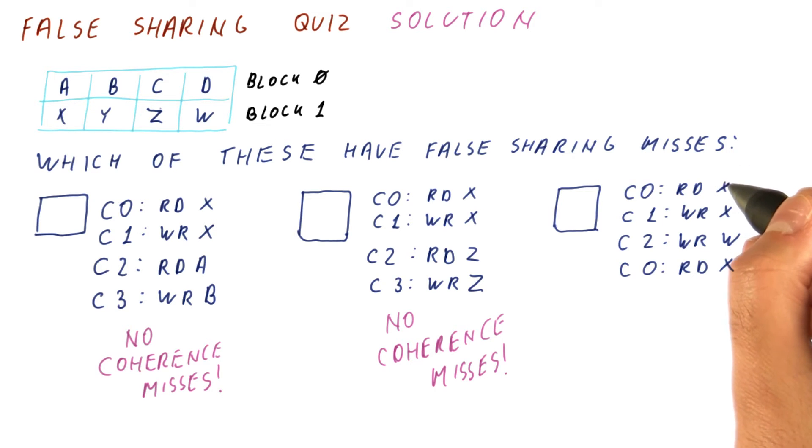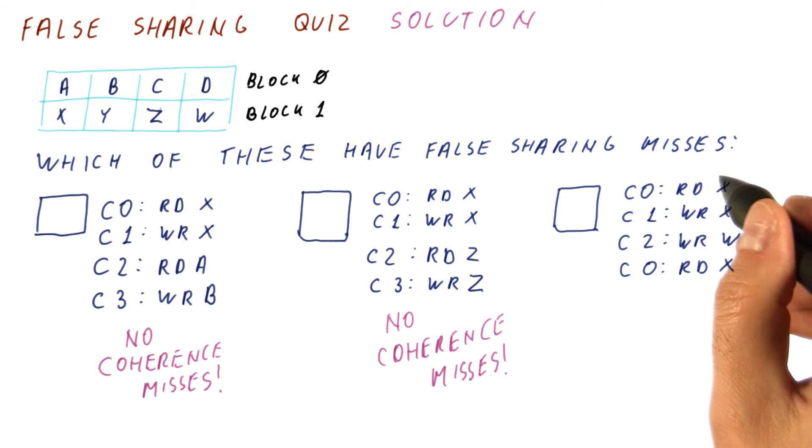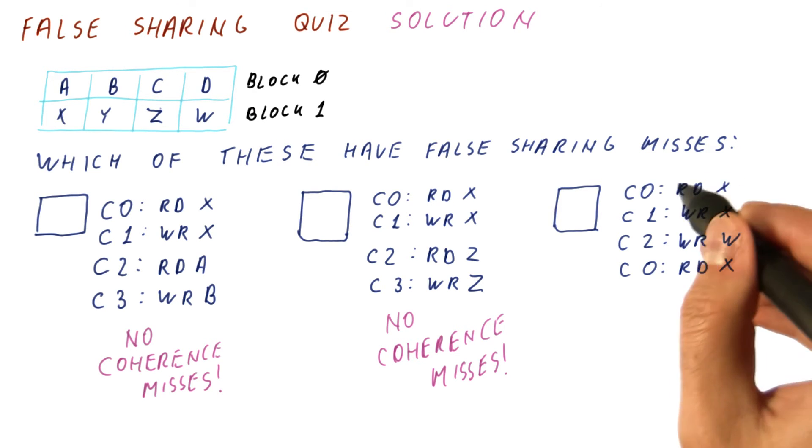Now let's look here. C0 reads X. C1 writes to X. This invalidates X in C0. This invalidation needs to happen in order for X to be written in C1. C2 now writes to W. That invalidates the data in C1's cache. The data in C0's cache was already invalidated at that point.